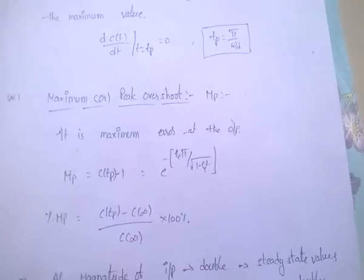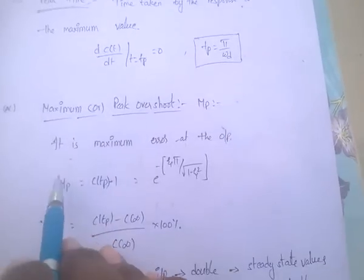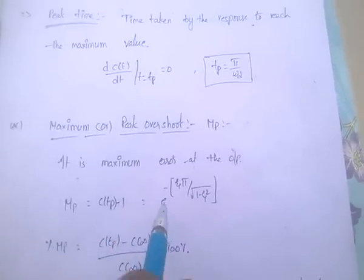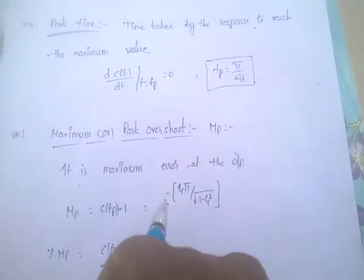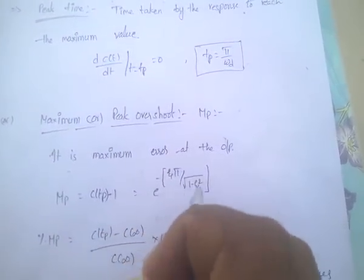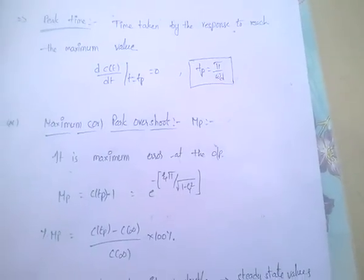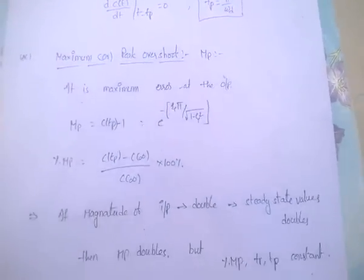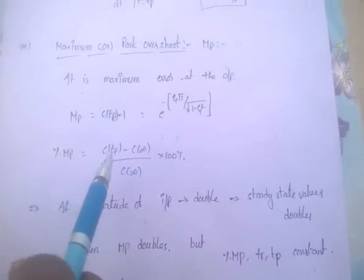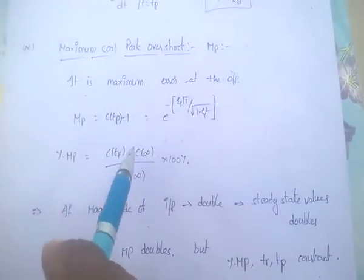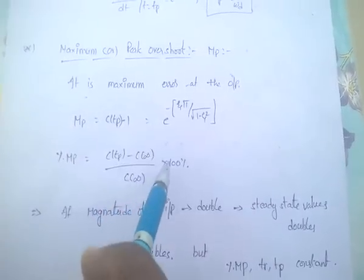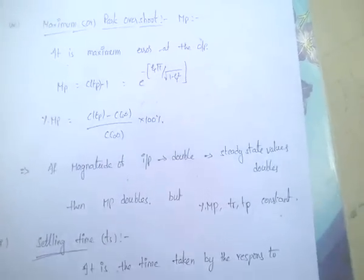Peak overshoot: mp = C(Tp) − 1 = e^(−ζπ / √(1 − ζ²)), where ζ is the damping ratio. Percentage mp = [C(Tp) − C(∞)] / C(∞) × 100%, where C(∞) is the final value.